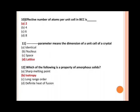Next, effective number of atoms per unit cell in BCC is dash. Options are: a) 2, b) 4, c) 6, d) 8. The correct answer is a) 2, because it has one atom from the center and one from the corner. So total atoms equal to 1 plus 1 equals 2.